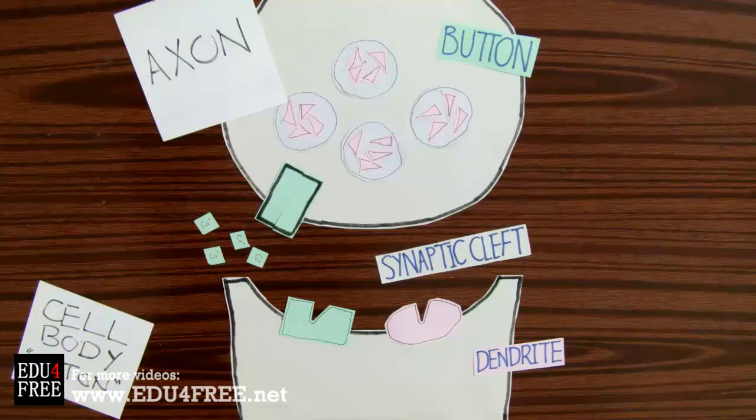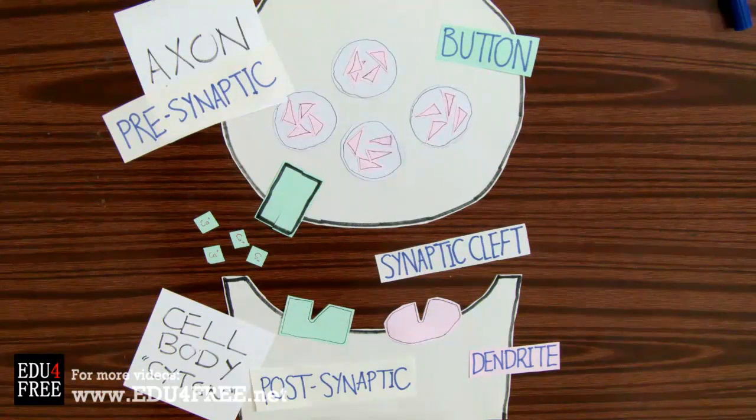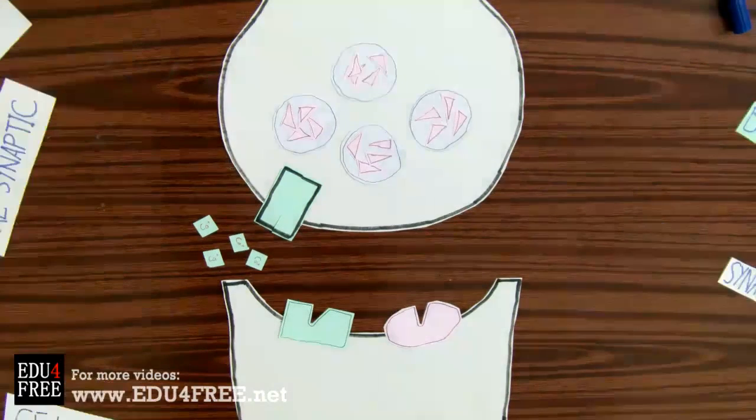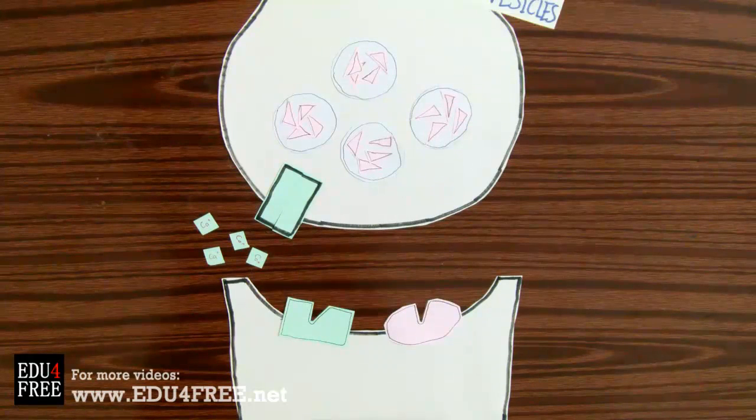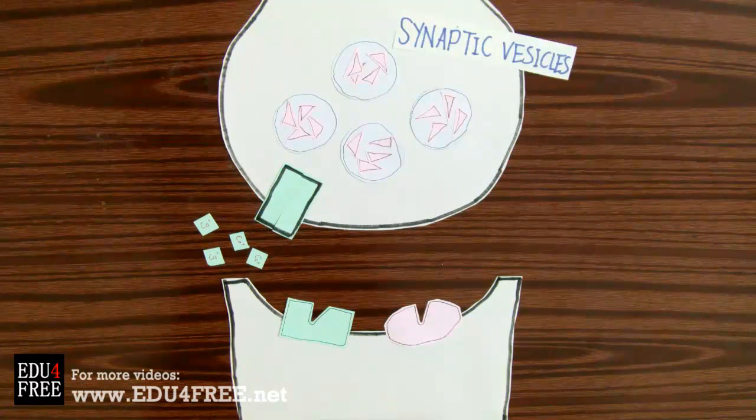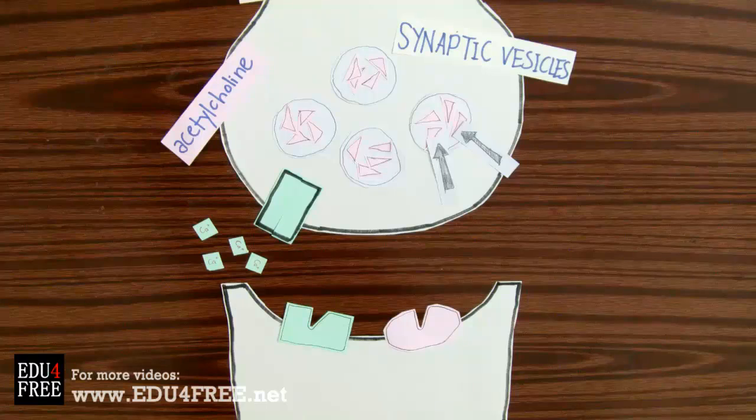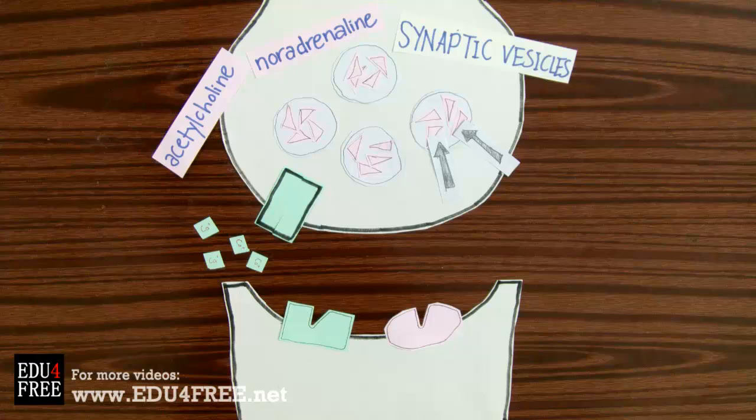The axon is called a presynaptic membrane while the dendrite is called a postsynaptic membrane. The synaptic button contains small vesicles called synaptic vesicles, which are filled with chemical transmitters such as acetylcholine and noradrenaline. These play an important role in the synaptic transmission of the nerve impulse from one neuron to the next.